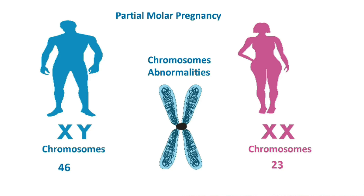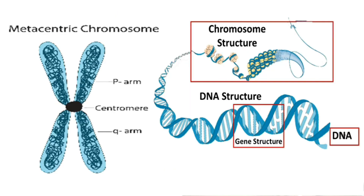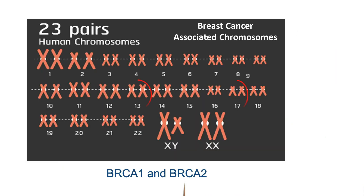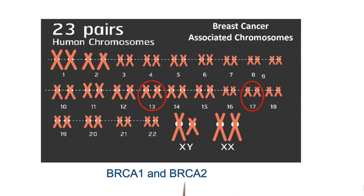Chromosome abnormalities can be inherited from parents or occur new to the individual. BRCA1 and BRCA2 genes on chromosomes 17 and 13, respectively, are associated with breast cancer.